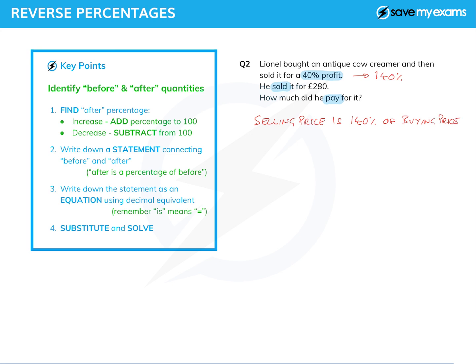That sums up his transaction very neatly. Turning it into an equation: selling price = 140% ÷ 100 = 1.4 × buying price. Putting the numbers in, it sold for £280, so 280 = 1.4 × buying price. We divide both sides by 1.4 — the 1.4s cancel — giving buying price = 280 ÷ 1.4, which is £200.